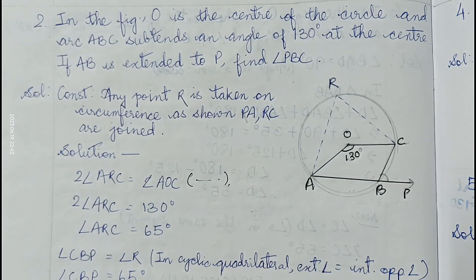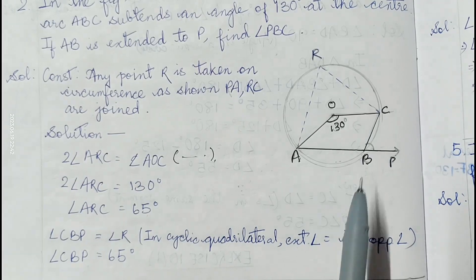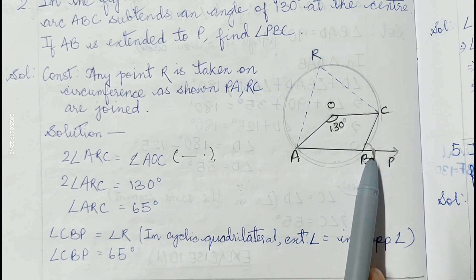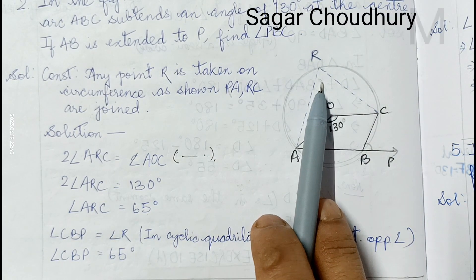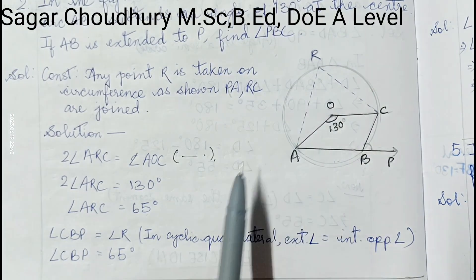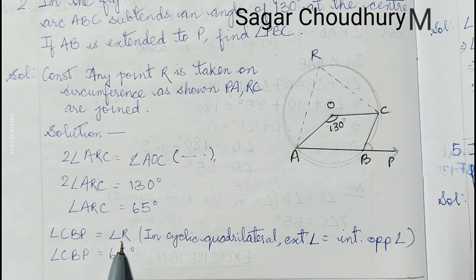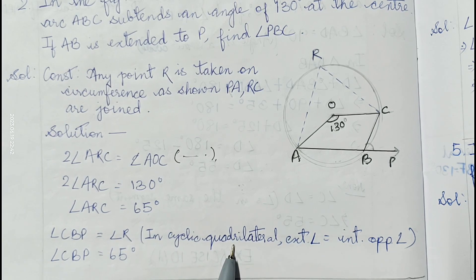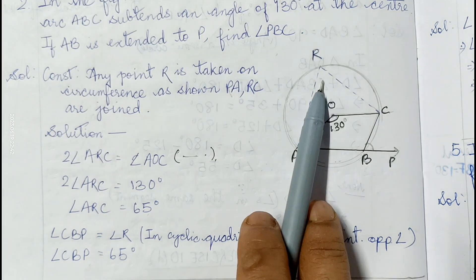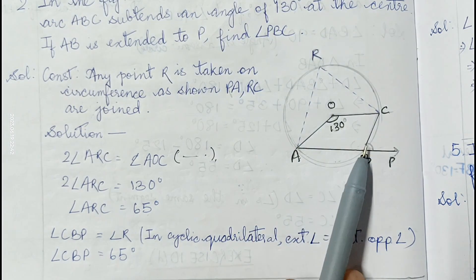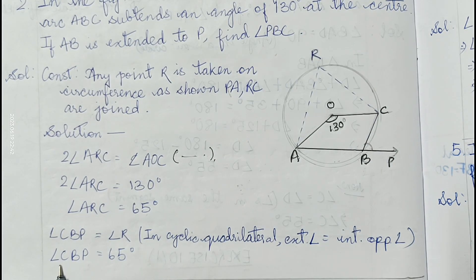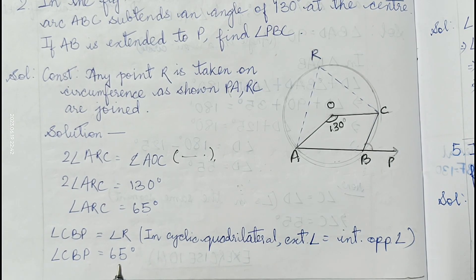Since ABCD is a cyclic quadrilateral, the exterior angle equals the interior opposite angle. So angle CBP equals angle R, which is 65 degrees. Therefore the required angle PBC is 65 degrees.